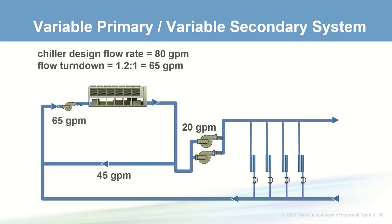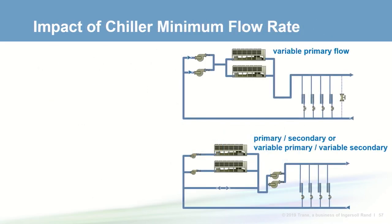Instead of going variable primary, let's look at a variable primary variable secondary system. Because the pumping is decoupled, the distribution pumps are allowed to freely unload and match the building load — going all the way down to 20 GPM instead of 65 GPM. Only the primary pumps are penalized by the high minimum flow of 65 GPM. To quantify the benefits, we'll compare energy consumption between different pumping configurations: variable primary, primary secondary, and variable primary variable secondary — all with two 250-ton air-cooled chillers at a system delta T of 15 degrees and a max hydronic turndown of 1.2 to 1.